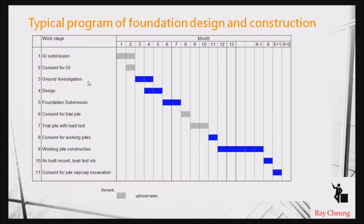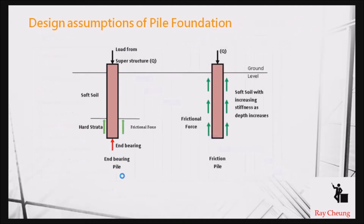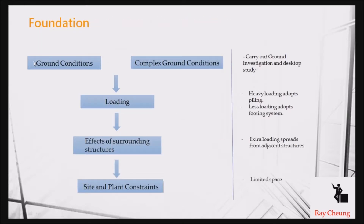After we receive the ground investigation results, we can do the design work. After we receive consent from the department, we do the trial piles and start construction. A typical assumption for end-bearing piles in Hong Kong is that we assume the end-bearing and the friction force below the rock head. Another type is the friction pile, which may not be rested on the rock.